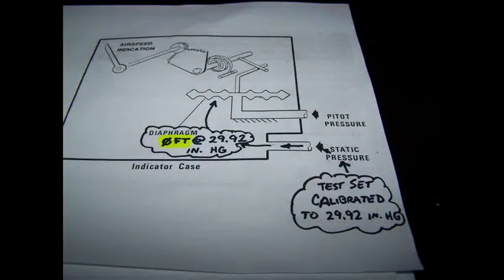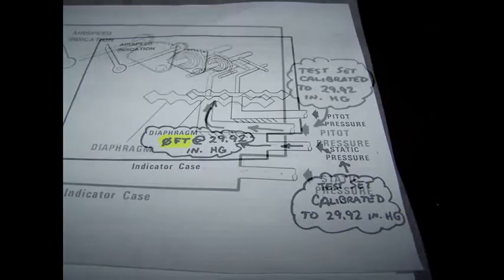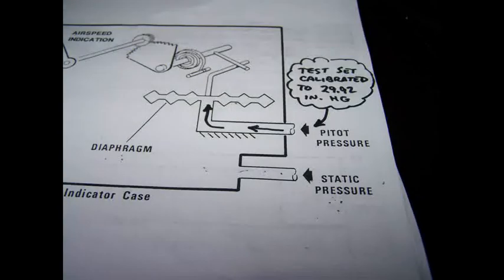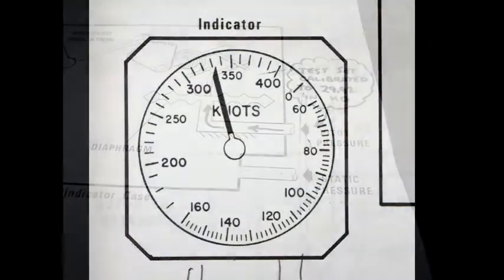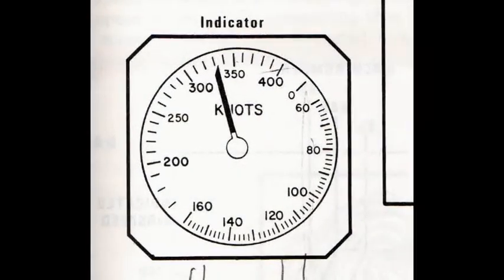Remember, airspeed is the difference between pitot pressure and static pressure. Your test set is calibrated to 29.92 on both pitot and static. So the pressure on both sides of the diaphragm have to be referenced to the same pressure level at this point, which is 29.92. Then put in your desired airspeed. The airplane should now be showing the airspeed that you have entered into the test set.